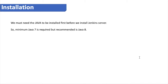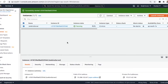Now let's see how to install the Jenkins application on our AWS cloud machine. Before we install Jenkins, we need to have Java installed first. The minimum Java requirement is version 7, but it is recommended to use Java version 8. Let's install Jenkins on an AWS EC2 instance.